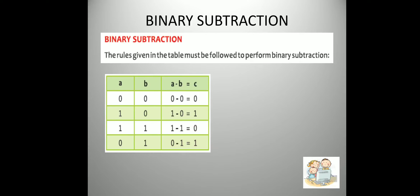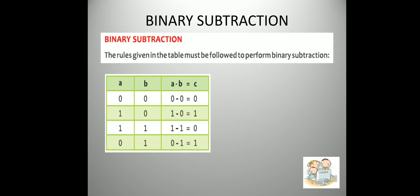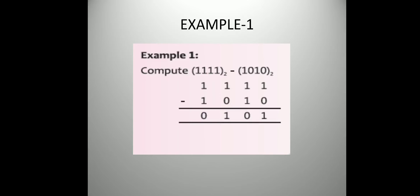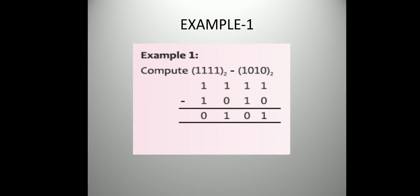Everything is okay here, but you have to take care of one thing. 0 minus 0 is 0, you know. 1 minus 0 is 1, this also you know. 1 minus 1 is 0, this is also clear. When 1 minus 1 comes, 0 will come — this is the same as given in the table.